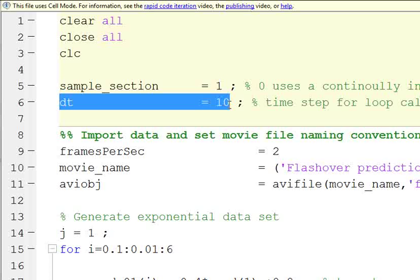DT is the change in time step for how much you're going to move every time the iteration runs. You'll see what that means specifically as we go through the code.